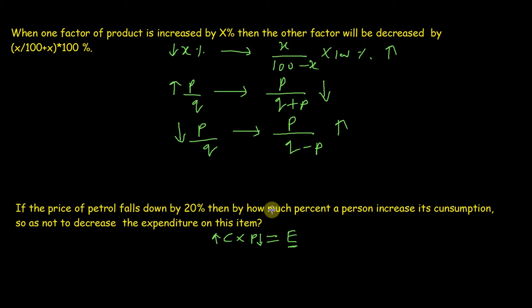I always prefer fraction formula because it's easy to use. We have given 20% decrease, and 20% is equal to 1/5, so we need to increase other factor by 1/(5 - 1) which is equal to 1/4, and that is equal to 25%. So the person needs to increase use of petrol by 25% more.